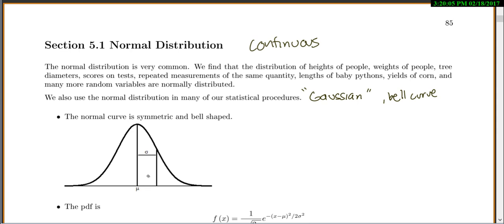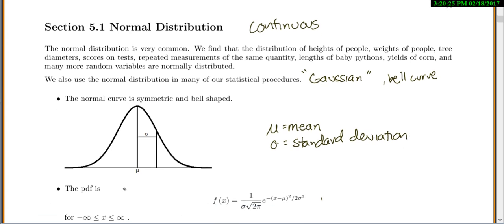There's two things that define it. You see this little mu and the sigma. Mu equals the mean, or the average, and sigma is the standard deviation. You'll see why we have it drawn like that. Down at the bottom, we'll figure that out.